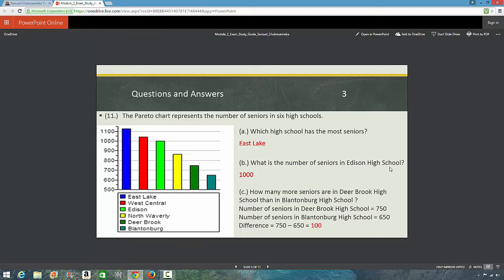What is the number of seniors in Edison High School? Edison High is represented by this color. I think this is lime color. And that is 1,000 students. How many more seniors are in Dear Brook High School than in Blantonburg High School? So, first of all, we find out of Dear Brook High School. Dear Brook is this color. That is about 750 students. And then Blantonburg High School is that color. About 650 students. So, the difference is 100 students. You have 100 more students in Dear Brook High School than in Blantonburg High School.